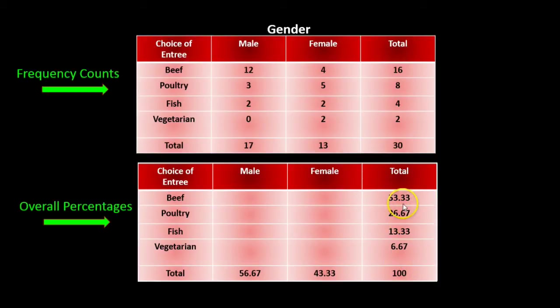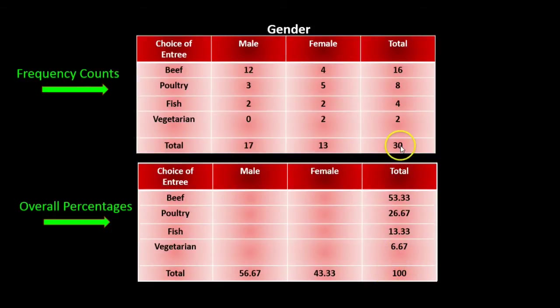Both the row percentages and the column percentages have to add up to the grand total. The grand total is 30 out of 30, and 30 divided by 30 would be 100 percent.